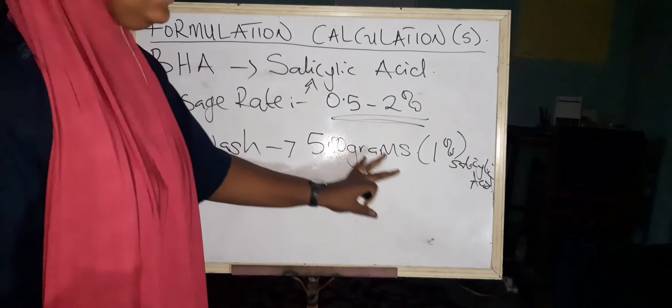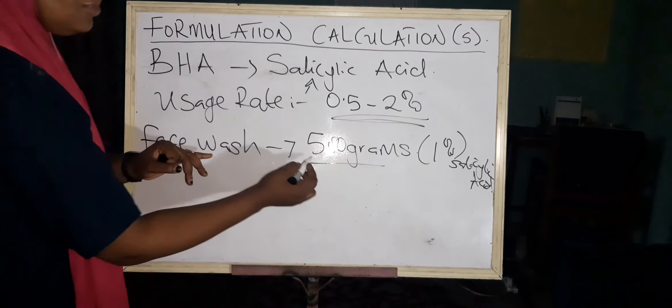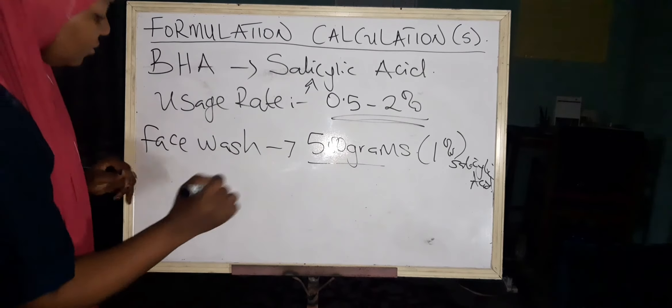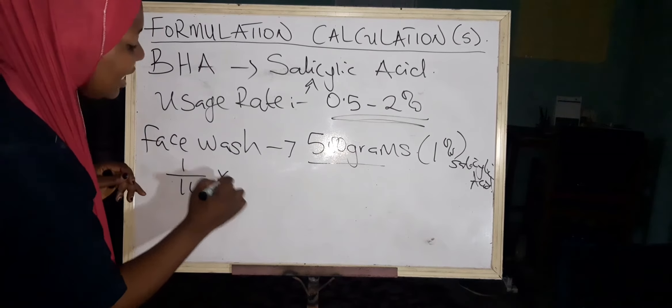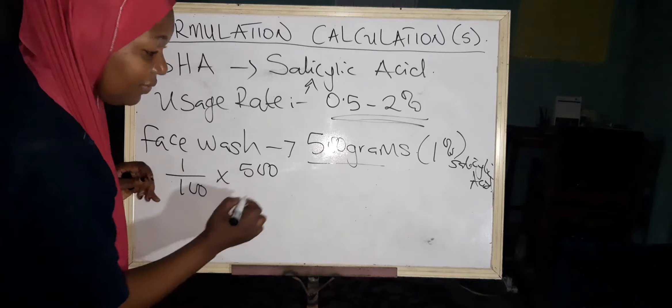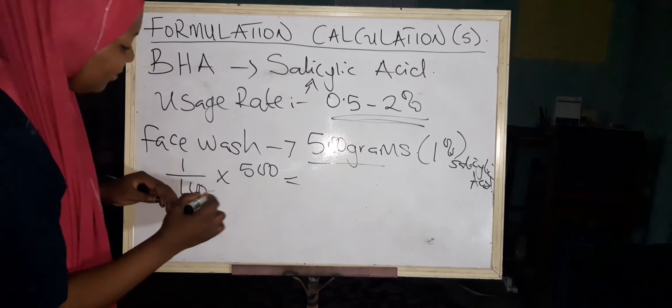Let's go: it's very simple—one percent, that's 1 over 100 times 500.